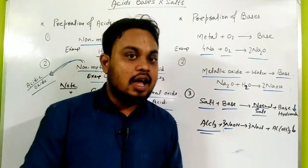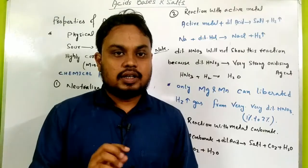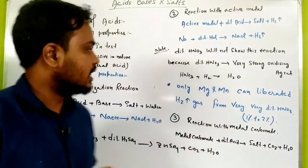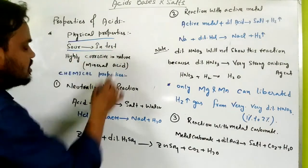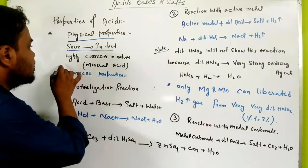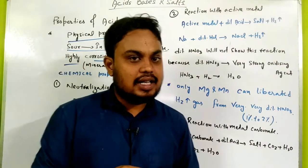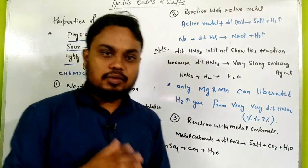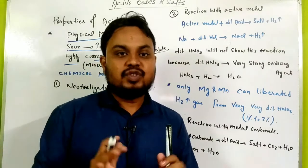Now we will see the properties of acid. In physical properties, the first is that acid is sour in taste — you already know this. The second is that acid is highly corrosive in nature. Mineral acids like H2SO4, HCl, HNO3, and carbonic acid are all highly corrosive in nature.